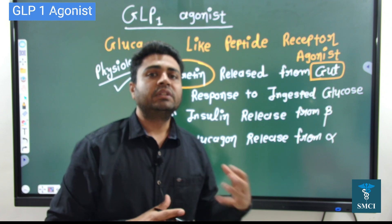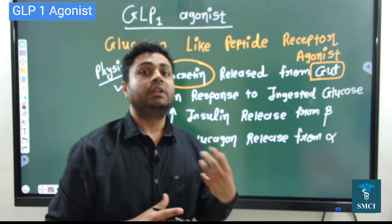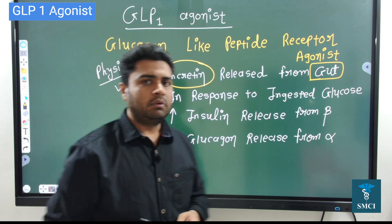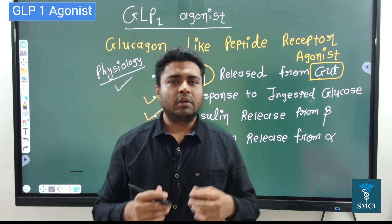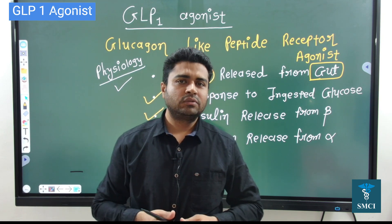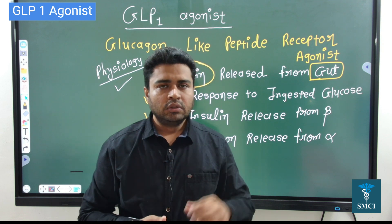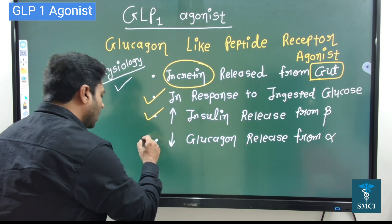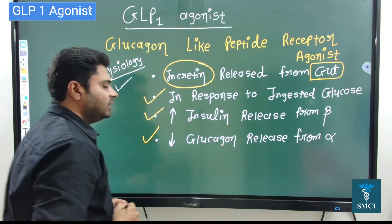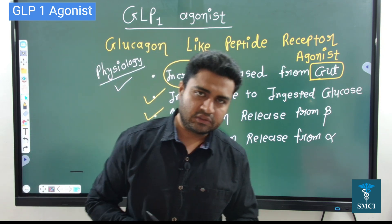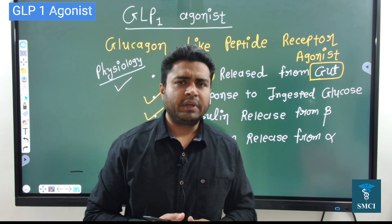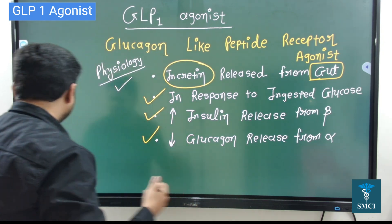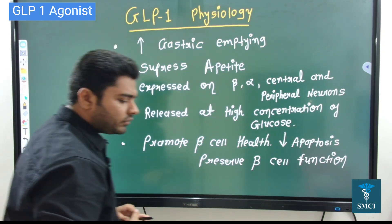The main mechanism of this GLP-1 analog is they increase insulin release. That is why they cannot be used in type 1 diabetes mellitus, in which production of insulin is absent and beta cells are non-functional. So the use of GLP-1 analogs is mainly in type 2 diabetes. Along with beta cells, they also inhibit the alpha cells of the pancreas and inhibit the release of glucagon.